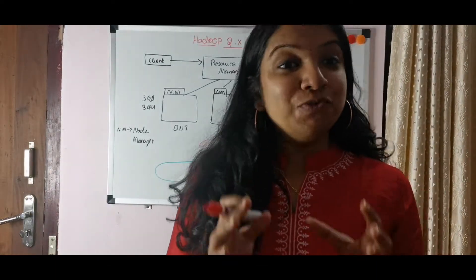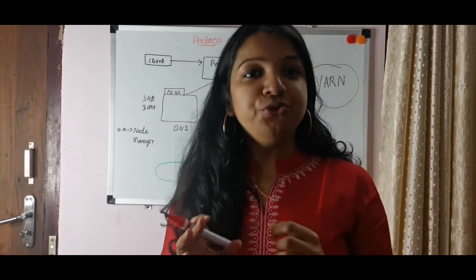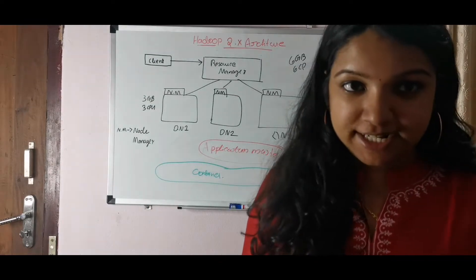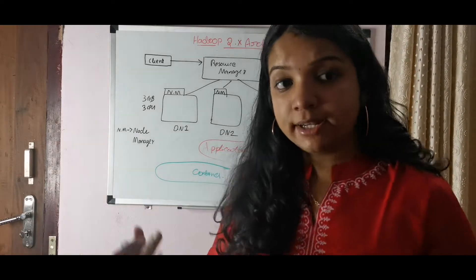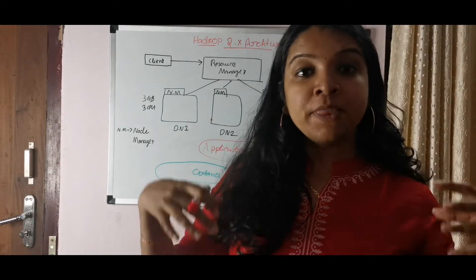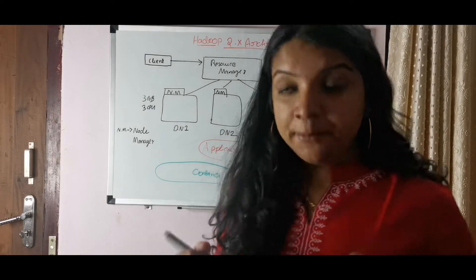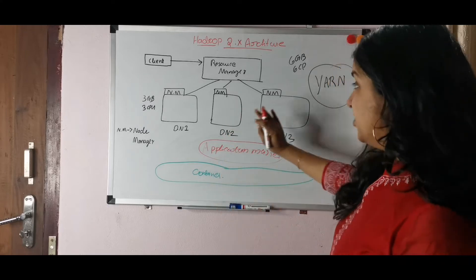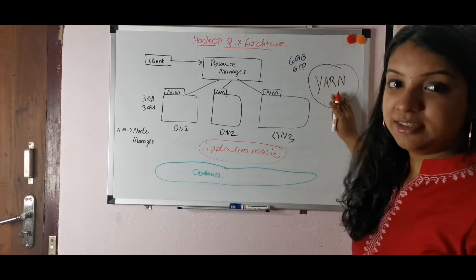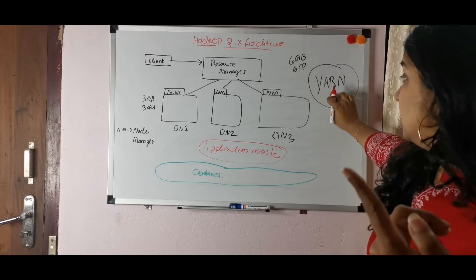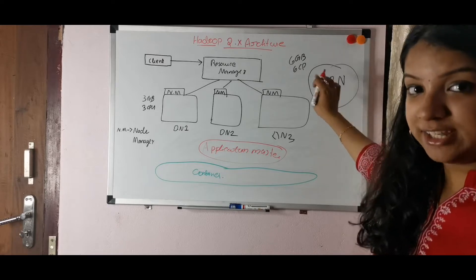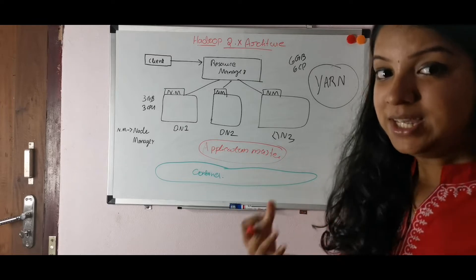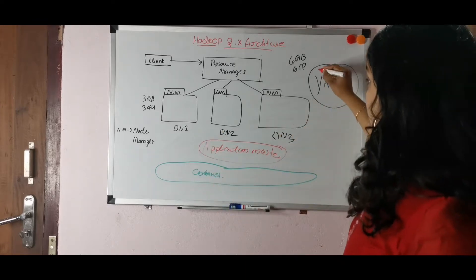In this video we will discuss the Hadoop 2.x architecture. We already know the 1.x architecture, and in this video we will discuss what improvements were made in the 2.x architecture. The important concept here is YARN, which stands for Yet Another Resource Negotiator — meaning we are getting resources from everywhere across the given nodes.